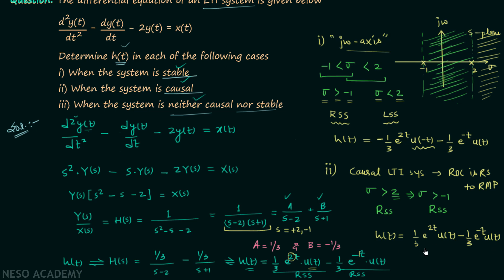The third case, where the system is neither causal nor stable, is left as homework. Use the same method applied in cases one and two to find the correct impulse response. If you have followed the previous lectures carefully, you should be able to solve it quickly. Post your answer in the comments section.